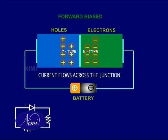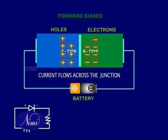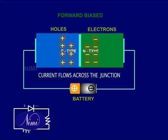The voltage required to move the charge carriers in forward bias conduction is called the barrier voltage.